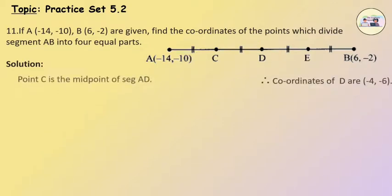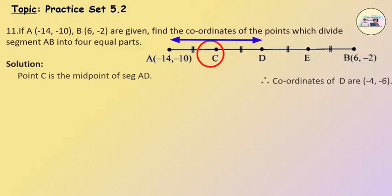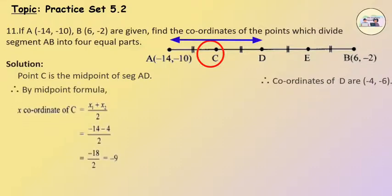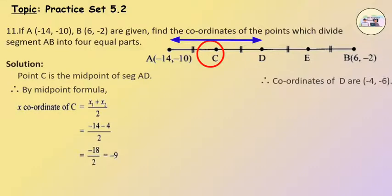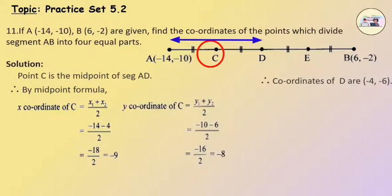The y-coordinate of D equals y1 plus y2 upon 2, which equals minus 10 minus 2 upon 2, which equals minus 12 upon 2, which equals minus 6. Therefore, the coordinates of D are (minus 4, minus 6). Point C is the midpoint of segment AD. By the midpoint formula, the x-coordinate of C equals minus 14 minus 4 upon 2, which equals minus 18 upon 2, which equals minus 9. The y-coordinate of C equals minus 10 minus 6 upon 2, which equals minus 16 upon 2, which equals minus 8.